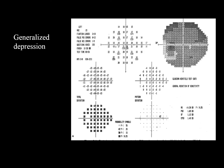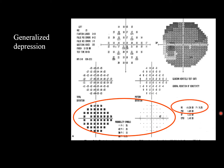This is an example of generalized depression where you see changes in the total deviation but nothing is seen in the pattern deviation. If you check the mean deviation here it is minus 14, so this is severe generalized depression. Notice also that the foveal threshold is reduced — normally it is around 30-32, but here it is 19.